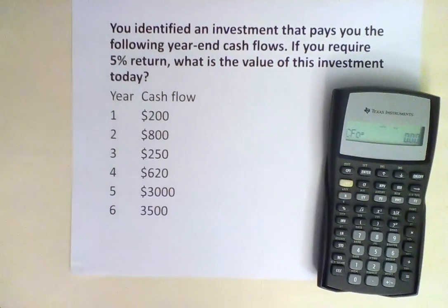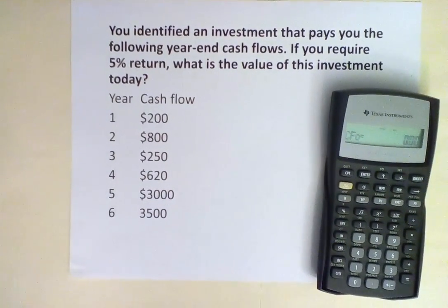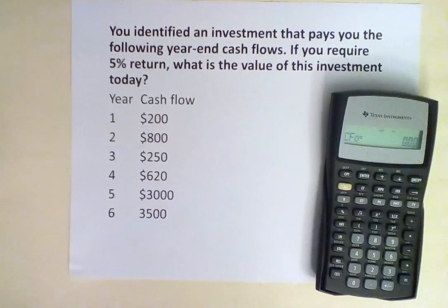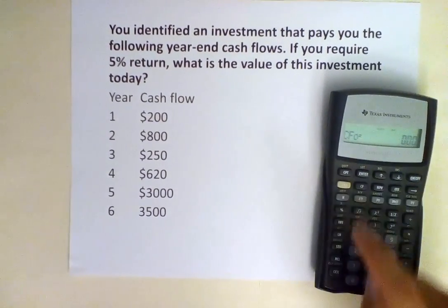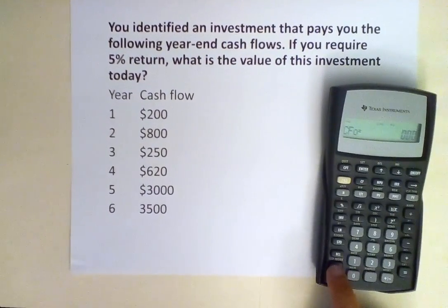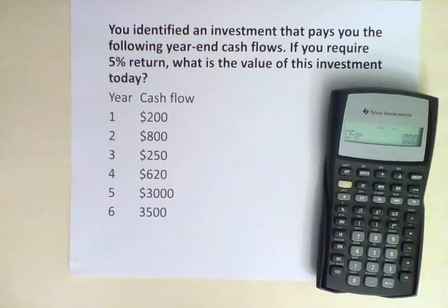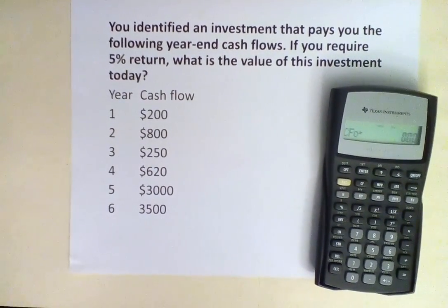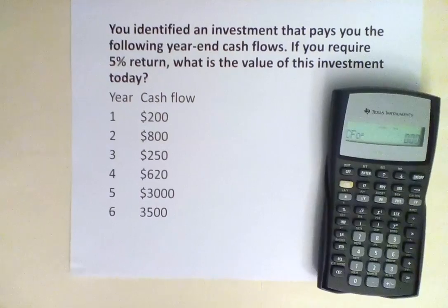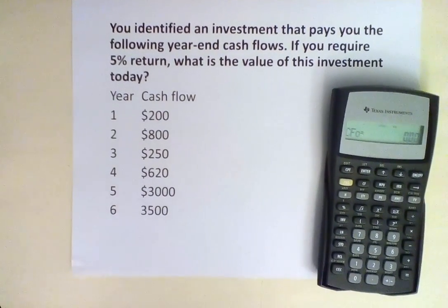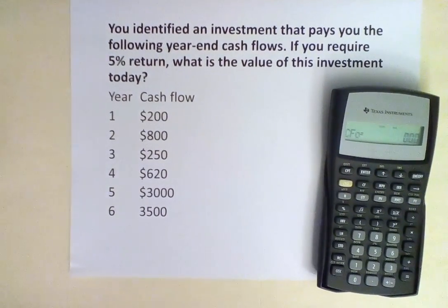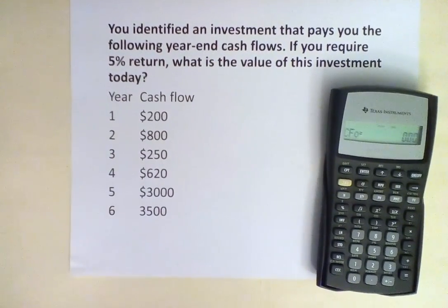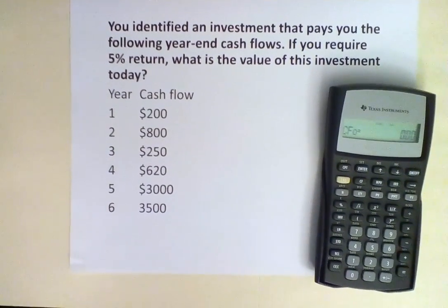Hit CF. Before you do anything, you need to make sure that you always clear your work. To do so, hit 2nd, then CLR. Now that the cash flow function is ready for input, we can start inputting the cash flows. CF0 is cash flow at time 0, and we have no cash flow, so we leave it at 0.